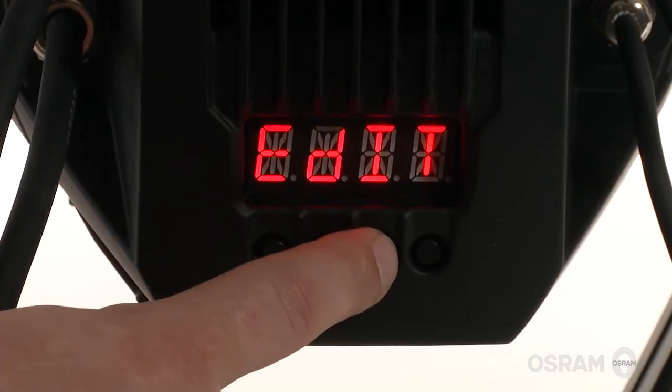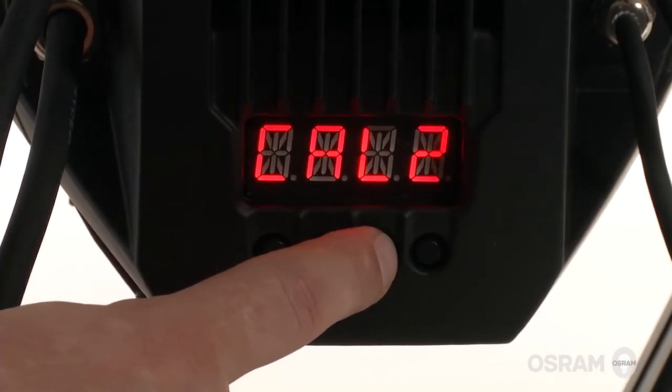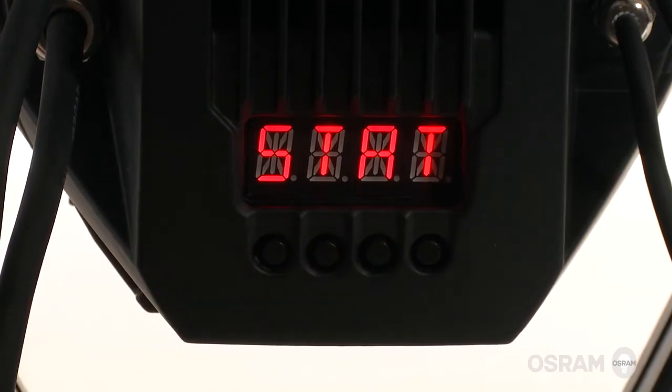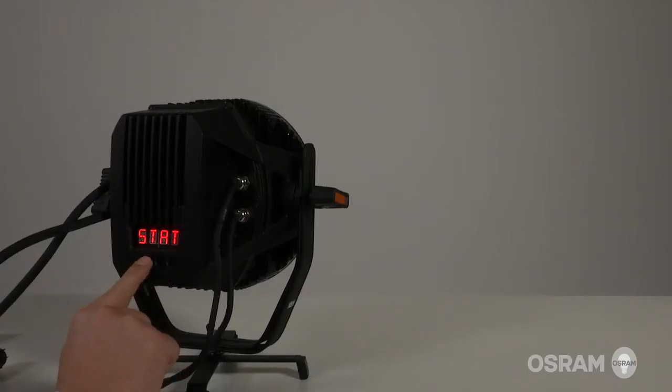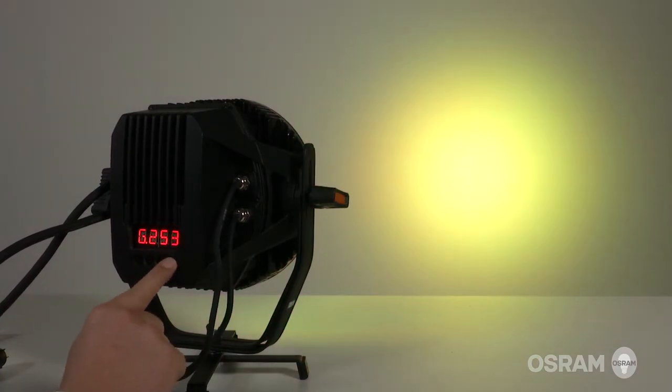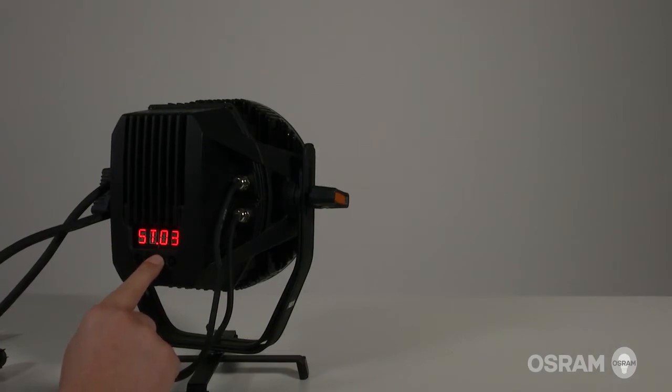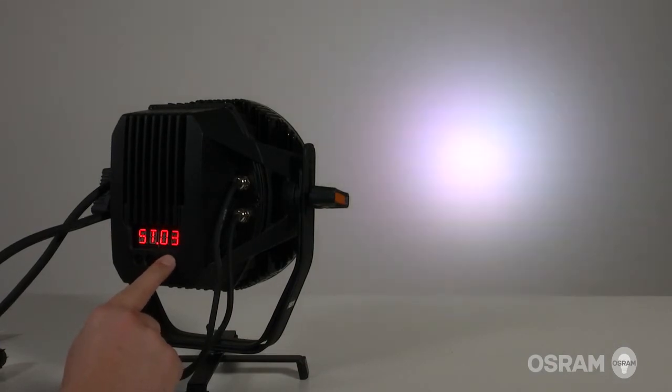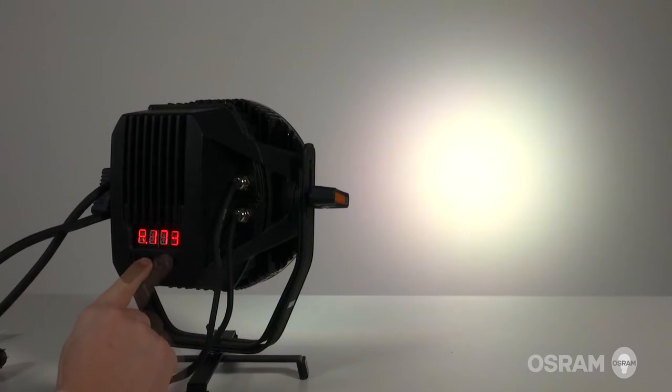First feature is the stand-alone mode. Please press menu until showing STAT. Afterwards you can access the different static colors via the ENTER button. By clicking on UP and DOWN you can change each value from 0 to 255. In addition to the colors you can also choose a strobe effect from 0 to 20 Hz. You can leave the fixture in STAT mode if you are looking for just a single static color.